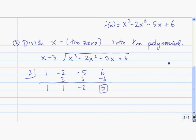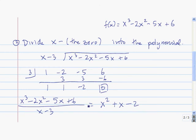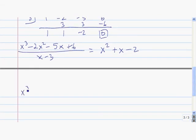So what that tells us is that x cubed minus 2x squared minus 5x plus 6 divided by x minus 3 is equal to x squared plus x minus 2. Or if we multiply both sides of this by x minus 3, we can write it this way. And then to finish factoring this completely, we just need to factor this portion.